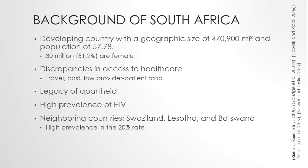To give you an idea on the background, South Africa is a developing country with a geographic size of 407,900 miles squared, a population of 57.78 million individuals, based on the 2019 mid-year estimates. Of this number, about 30 million, which is 51.2%, are females. Discrepancies regarding access to healthcare are prevalent in South Africa due to barriers associated with cost of travel, cost of medical attention, and low provider-to-patient ratios. The legacy of the apartheid period in South Africa still prevails, causing significant inequalities in the education system, political decision-making, and access to healthcare. All these factors working in unison have exacerbated the current HIV situation.